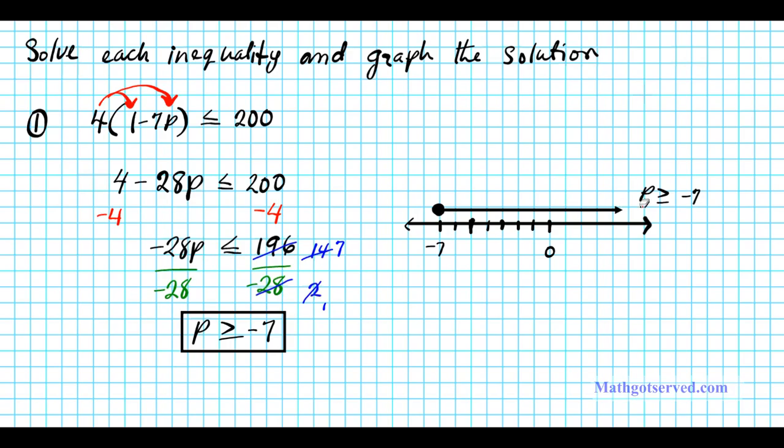Remember that this line right here means that negative 7 is included in the solution region. If we didn't have a line underneath the inequality symbol then our circle here will be an open circle.